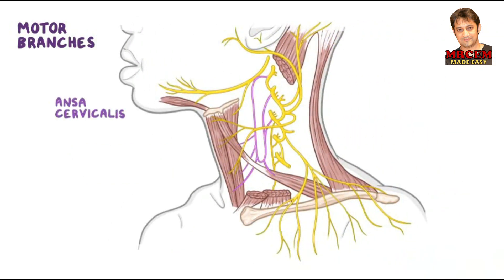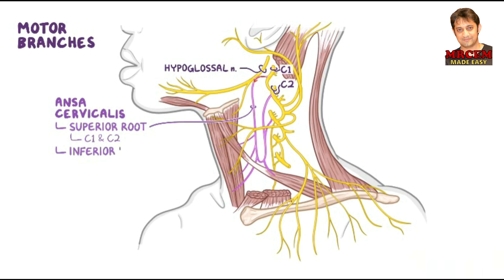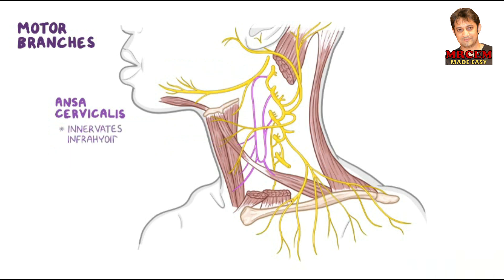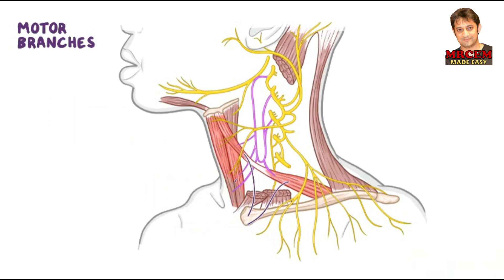The ansa cervicalis is a loop formed by the union of the superior root of the ansa cervicalis, which is composed of fibers from C1 and C2 and can be seen briefly joining the hypoglossal nerve, and the inferior root of the ansa cervicalis, composed of fibers from C2 and C3. The ansa cervicalis innervates the infrahyoid muscles — specifically the omohyoid, sternothyroid, and sternohyoid — but not the thyrohyoid, which is innervated by a motor nerve deriving solely from C1 fibers that travel with the hypoglossal nerve before descending as the nerve to the thyrohyoid.